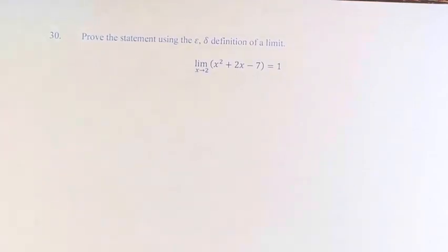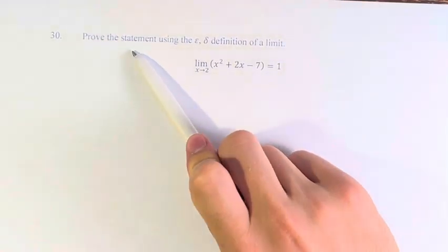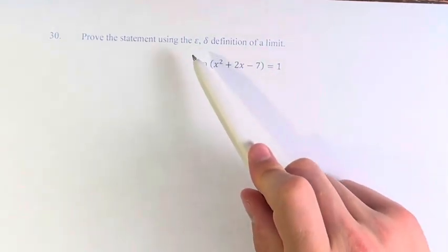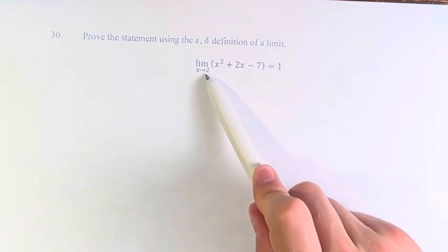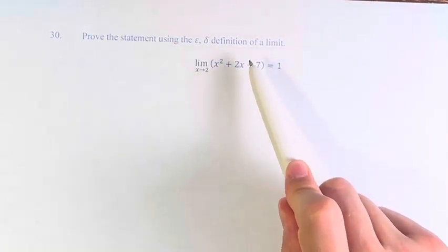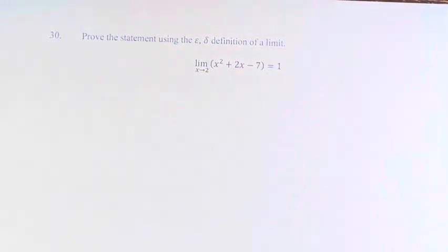Hello, and welcome back to another video. In this problem, we're asked to prove the statement using the precise definition of a limit: the limit as x approaches 2 of x squared plus 2x minus 7 is equal to 1.